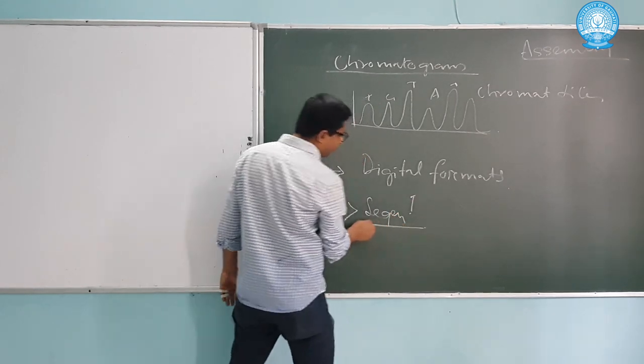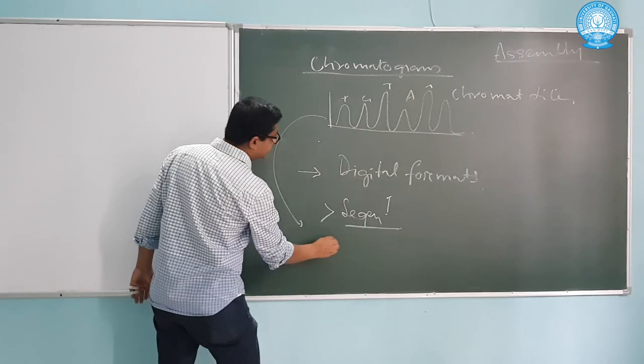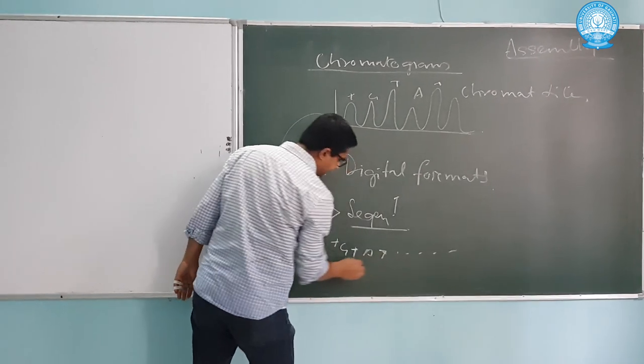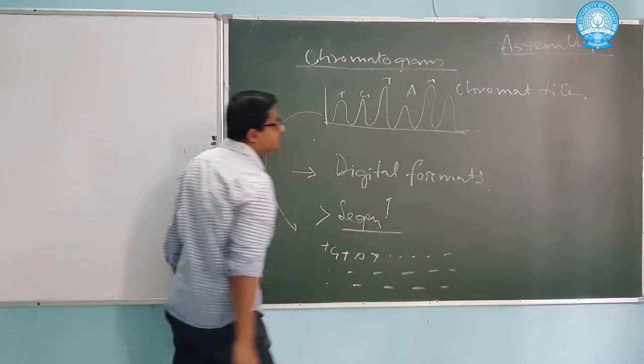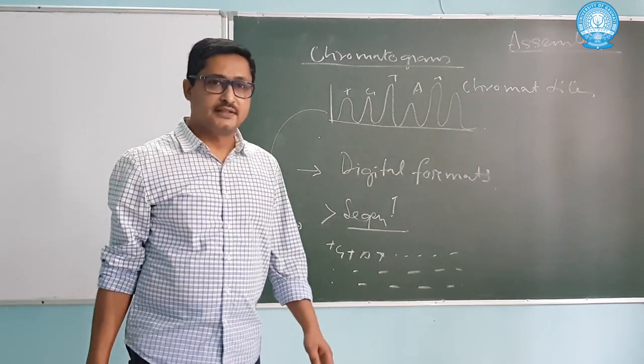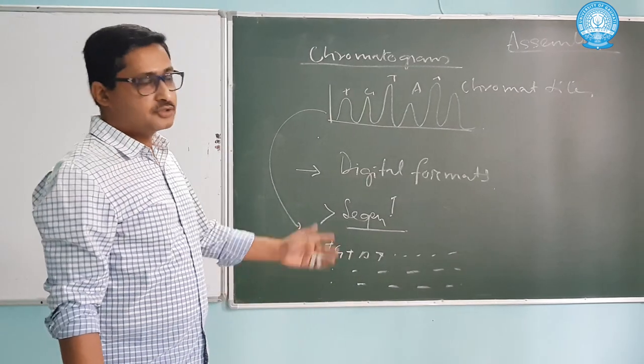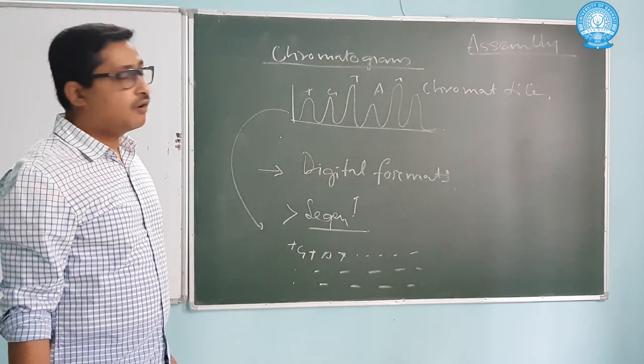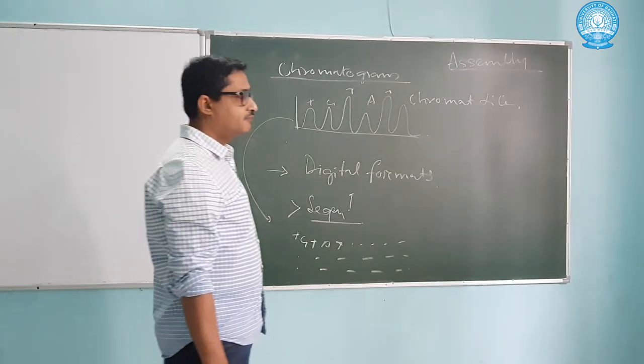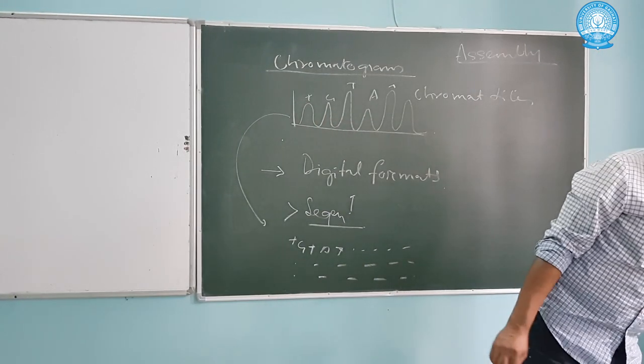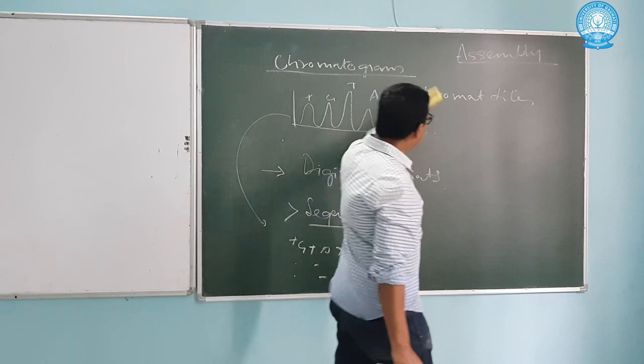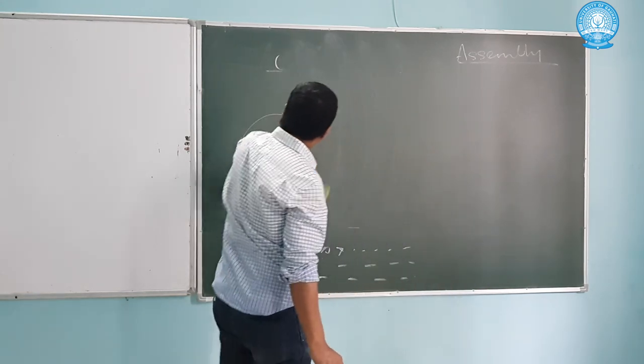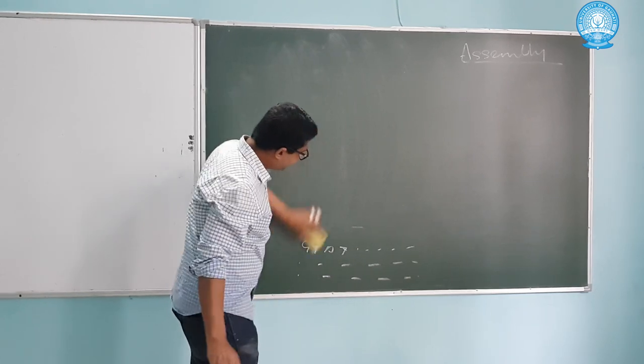Sequence one will be like T, G, T, A, T, C, like this. Now, when we do sequencing by Sanger sequencing or Sanger's dideoxy, we get lots of reads. All these reads come in as flat files. So if we have, suppose, 30,000 sequences like this.